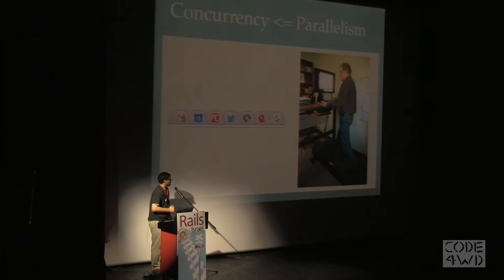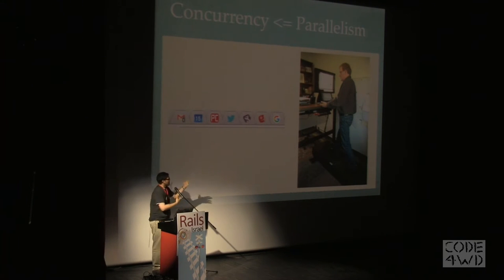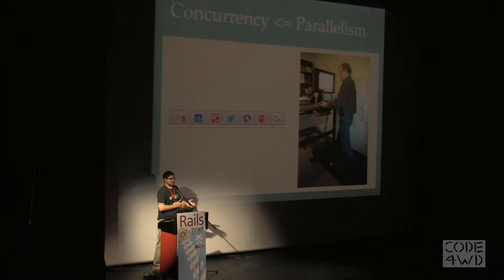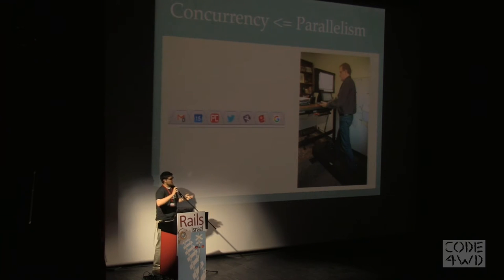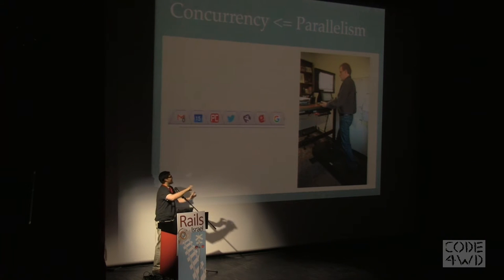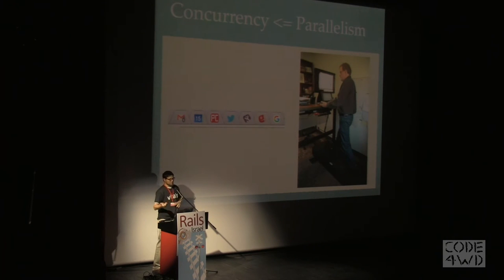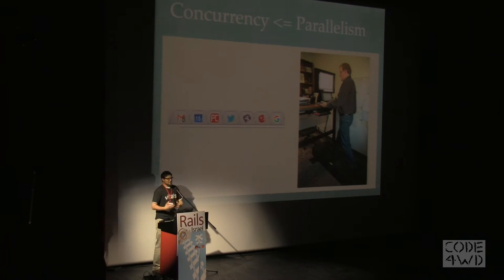As an example, on the right you have someone working at a treadmill desk. If that person has been doing his thing for the last hour, he has spent an hour walking and an hour getting work done. Both of those tasks are happening at the exact same moment — they're being fully, fully parallelly accomplished. On the left you have an example of concurrency without parallelism. Those are browser tabs, something we're all very familiar with from our everyday lives.